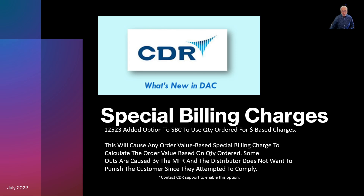This new feature of special billing charges allows you to determine if the minimum order dollar value is based on the quantity shipped, which was the traditional method, versus the quantity ordered. With today's supply chain issues, many people are having trouble fulfilling an order, even though the retailer is trying to comply with a minimum. That's what this change relates to.